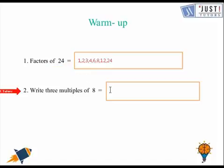Let's write three multiples of 8. I'm writing the first three multiples: 8, 16, 24. The numbers that come in the times table are called multiples.